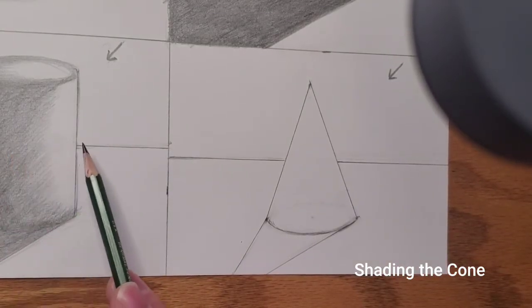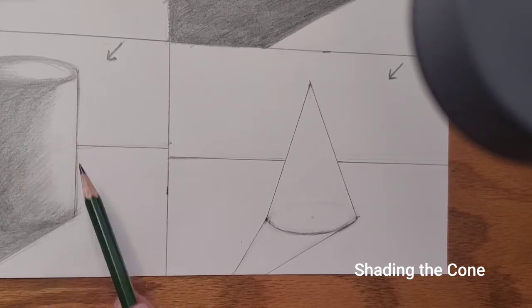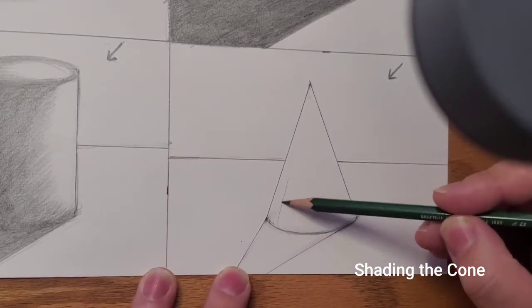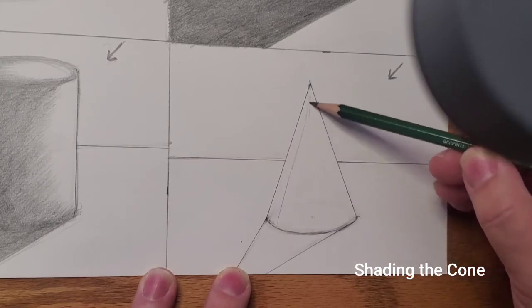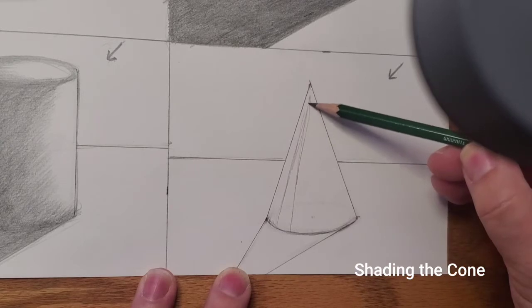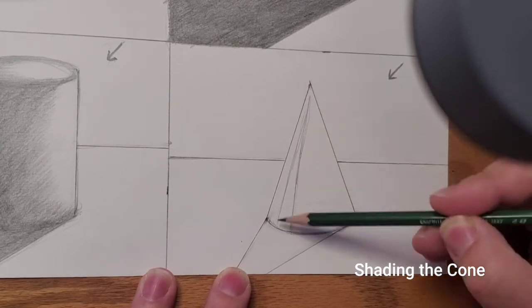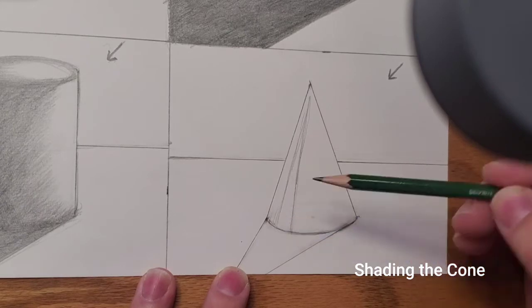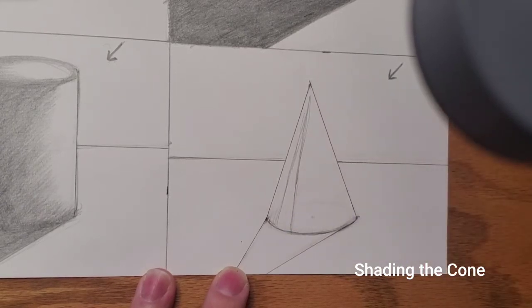Our darkest value on the form itself will go right about here. Because the form is triangular or goes to a point, our shadows will be rather triangular as well.